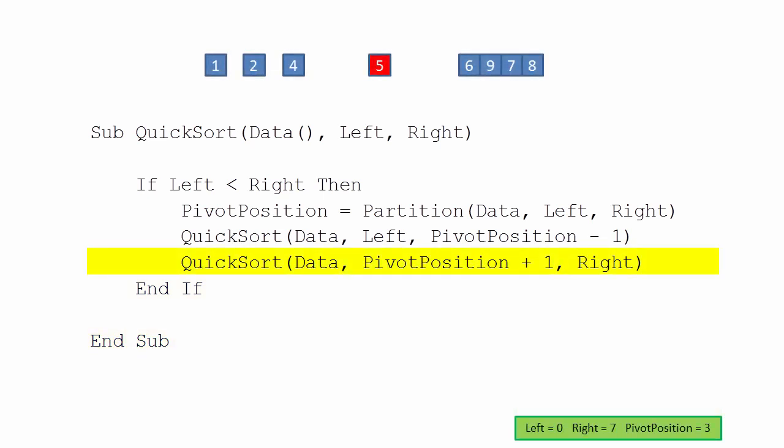Eventually, the very first instance of quicksort has regained control of the processor. The first instance of quicksort can now go to work on the right-hand side of the original list. It calls itself again, passing in a left pointer that defines the start of this sublist.